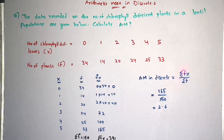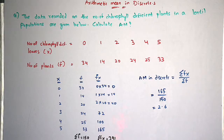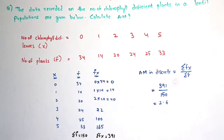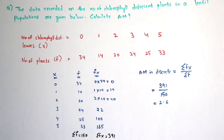The formula for arithmetic mean in discrete series is sigma fx by sigma f. Sigma fx equals 391 and sigma f equals 150, so 391 divided by 150 equals 2.6, which is the final answer. Writing the result is very important — it carries two marks.